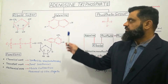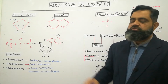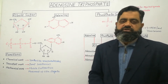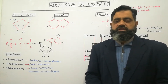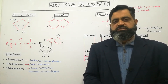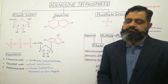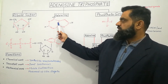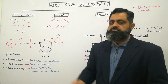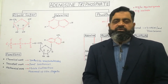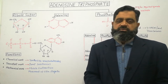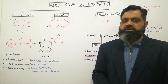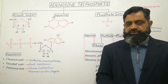The second component we need to synthesize adenosine triphosphate is a nitrogen base which is known as adenine. Adenine is a double-ring nitrogen base composed of carbon, oxygen, hydrogen, and nitrogen.